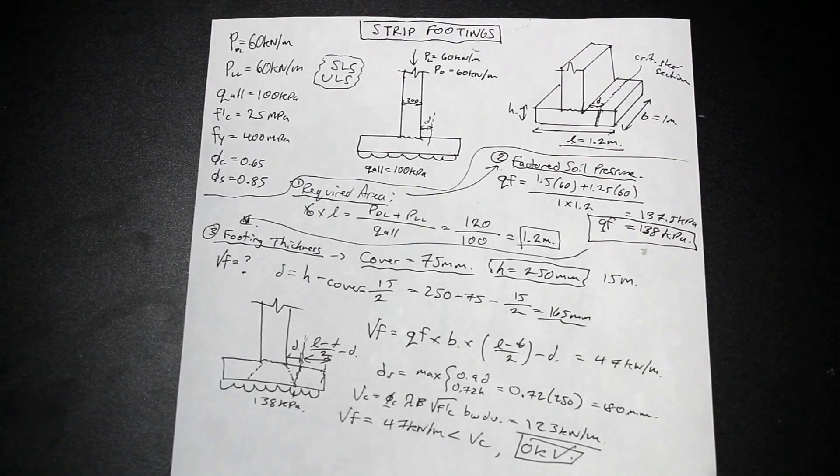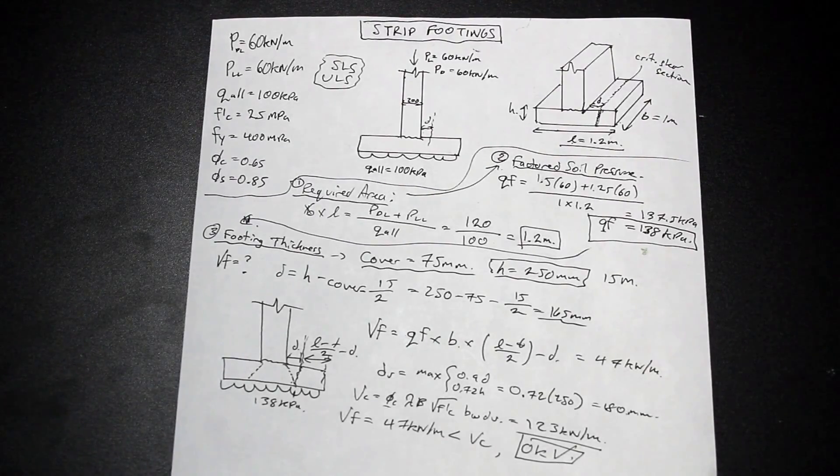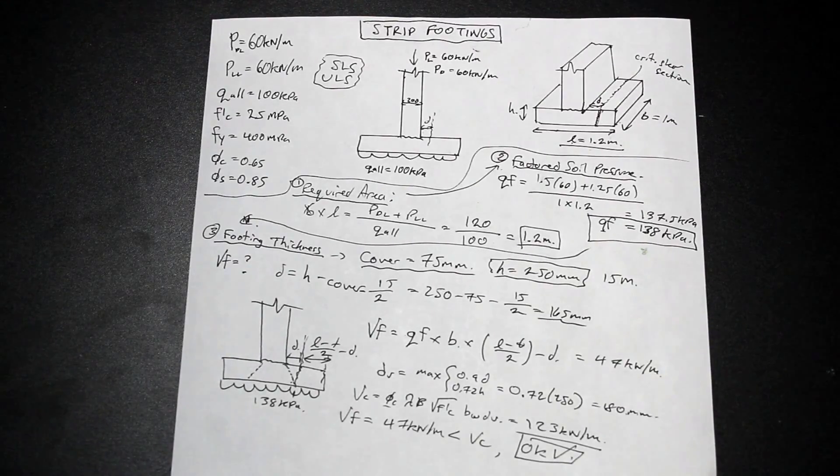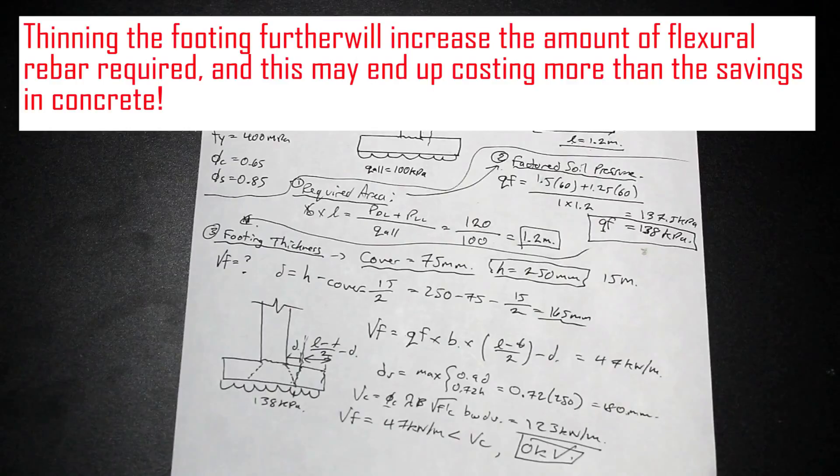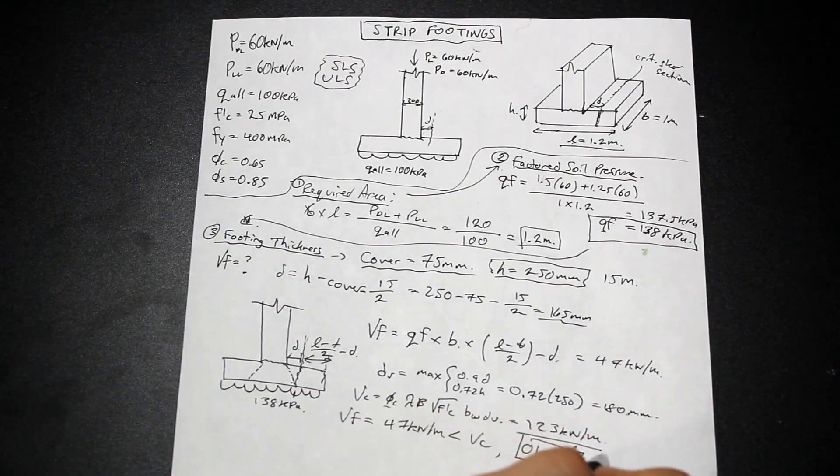So the idea is, we want to provide enough thickness in our footings so that we don't add stirrups. Because placing stirrups in footings is expensive and it takes a long time. It's much better to increase the concrete on 100 mils, 200 mils, something like that to make it work. So in this case, we're actually quite a bit over, but 250 is a good thickness for our footing. We don't really want to go any more. So yeah. Anyway, so that's good for now.